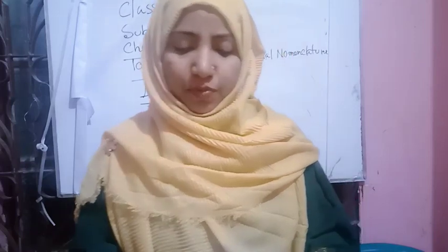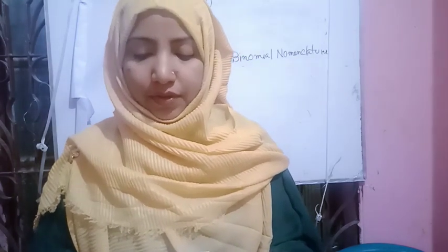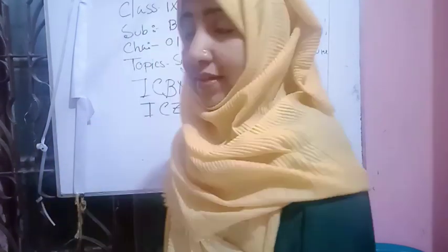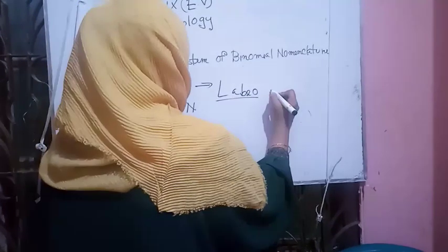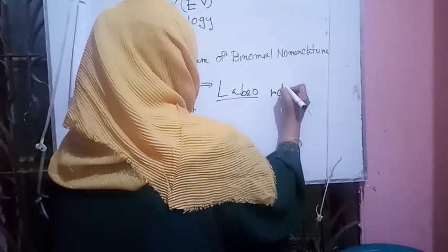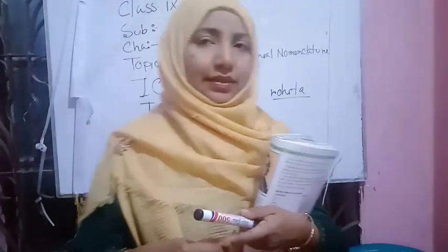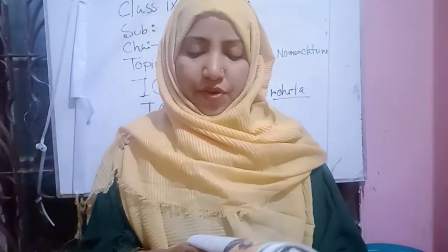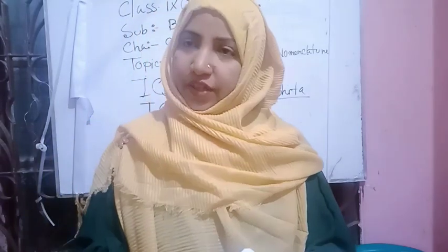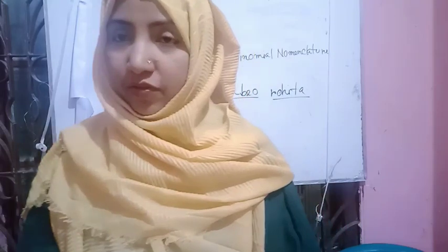Rule two: every scientific name should have two parts, and the genus name always comes first, followed by the species name. For example, the scientific name of rohit fish is Labeo rohita. Here Labeo is the genus and rohita is the species.